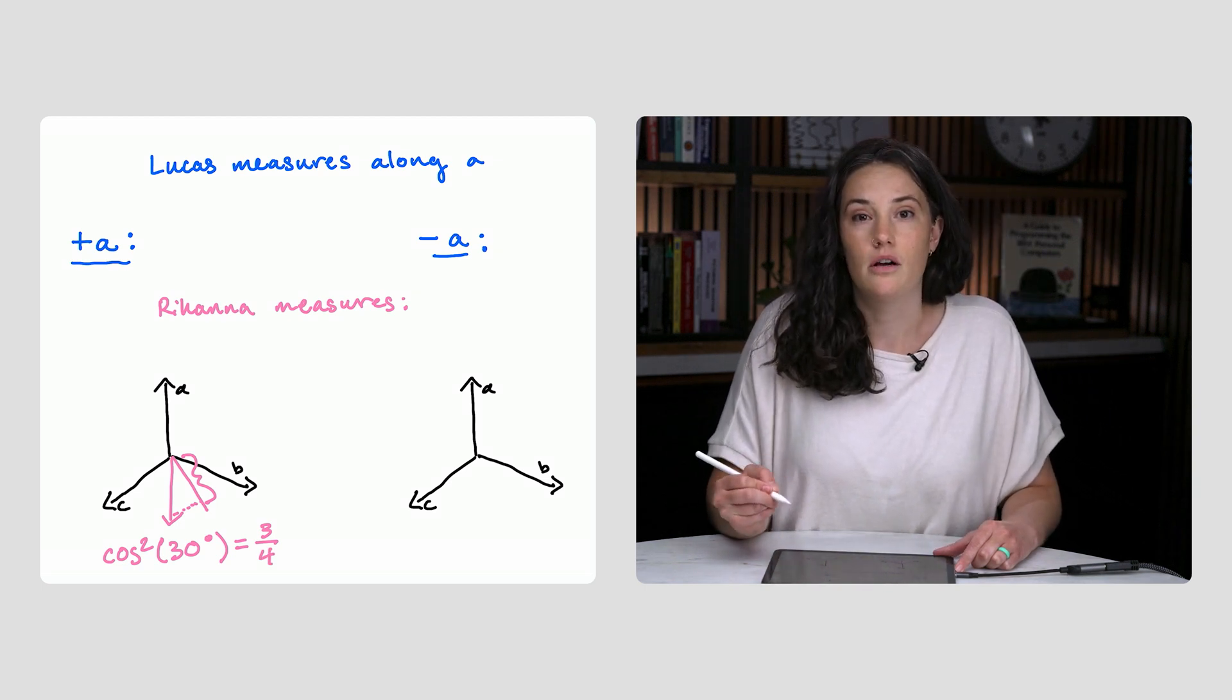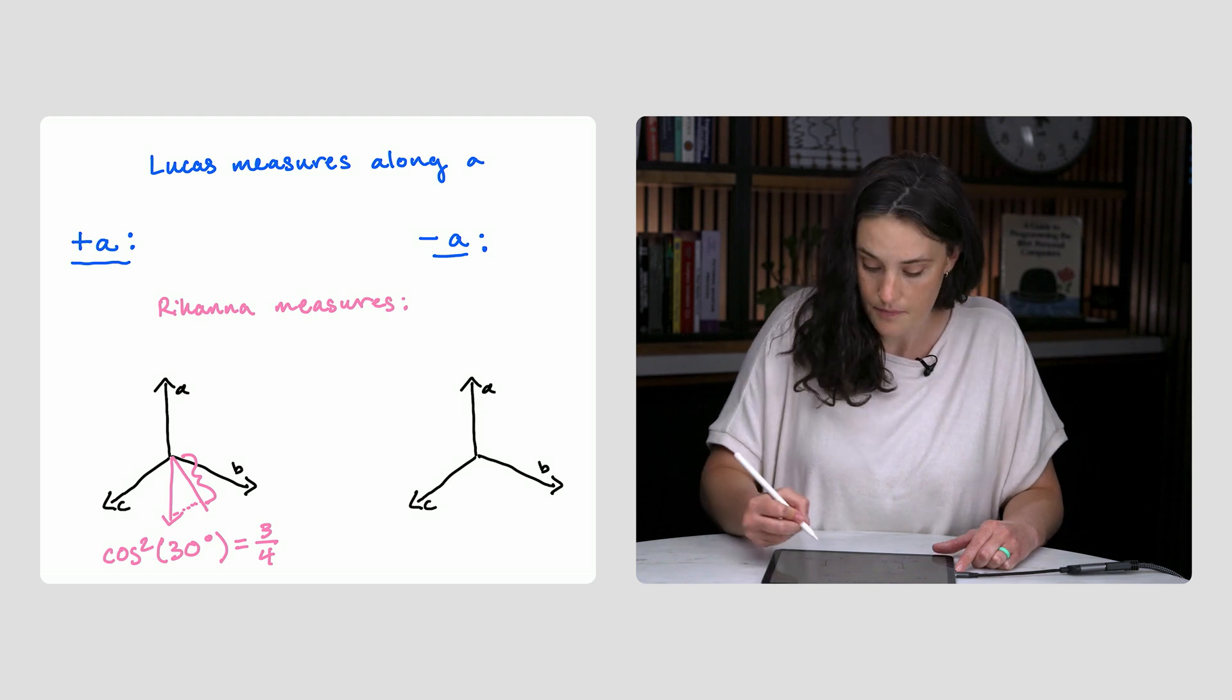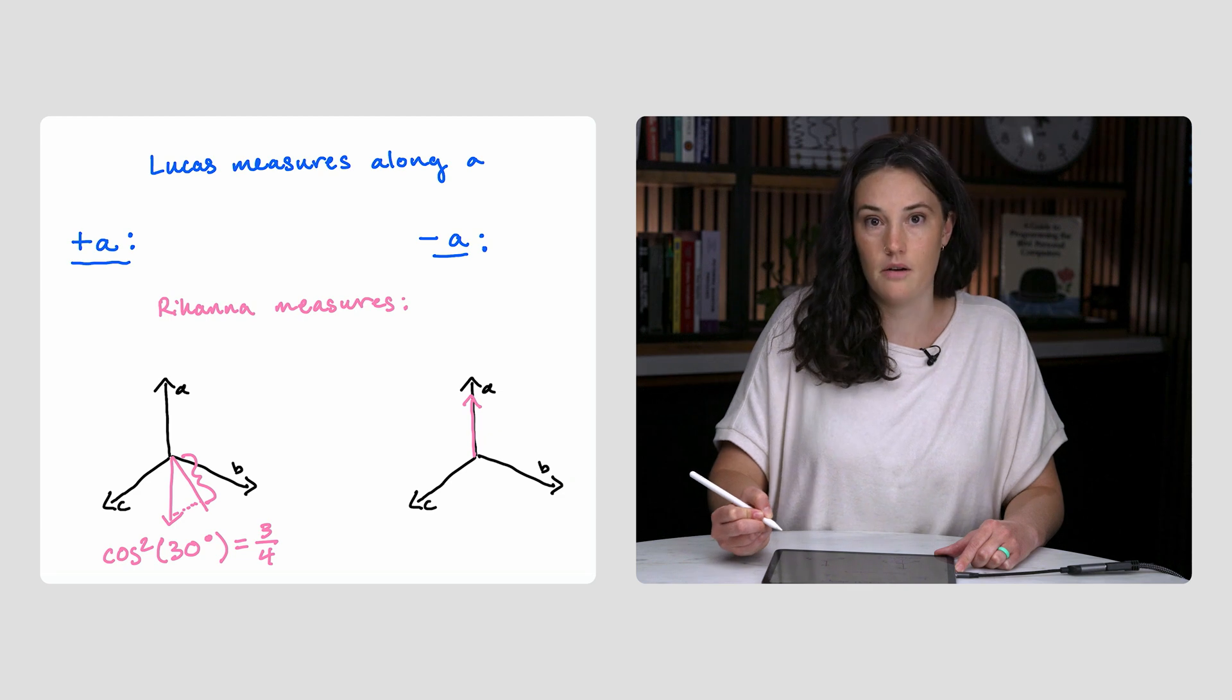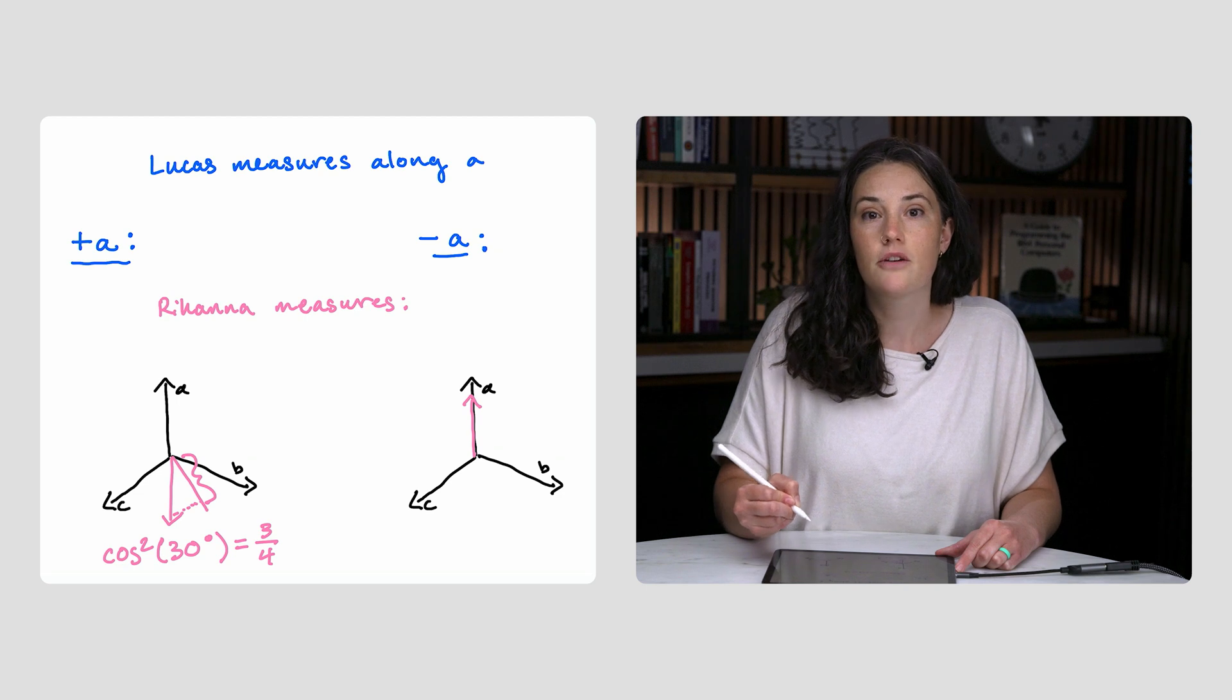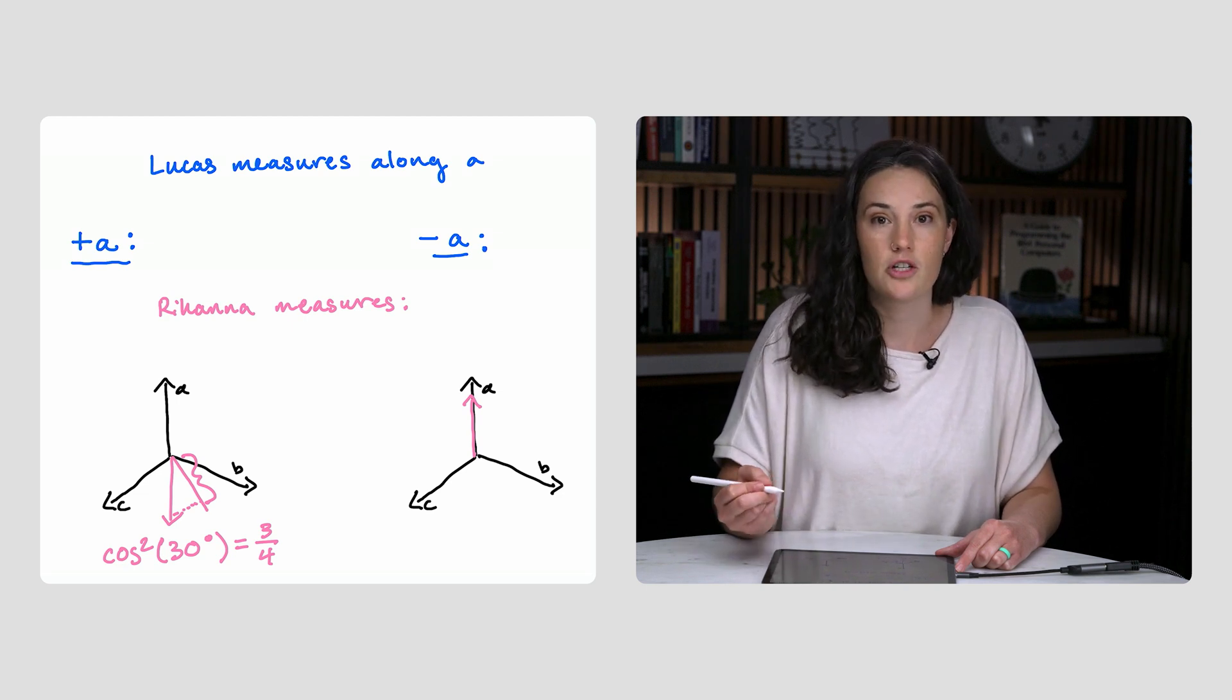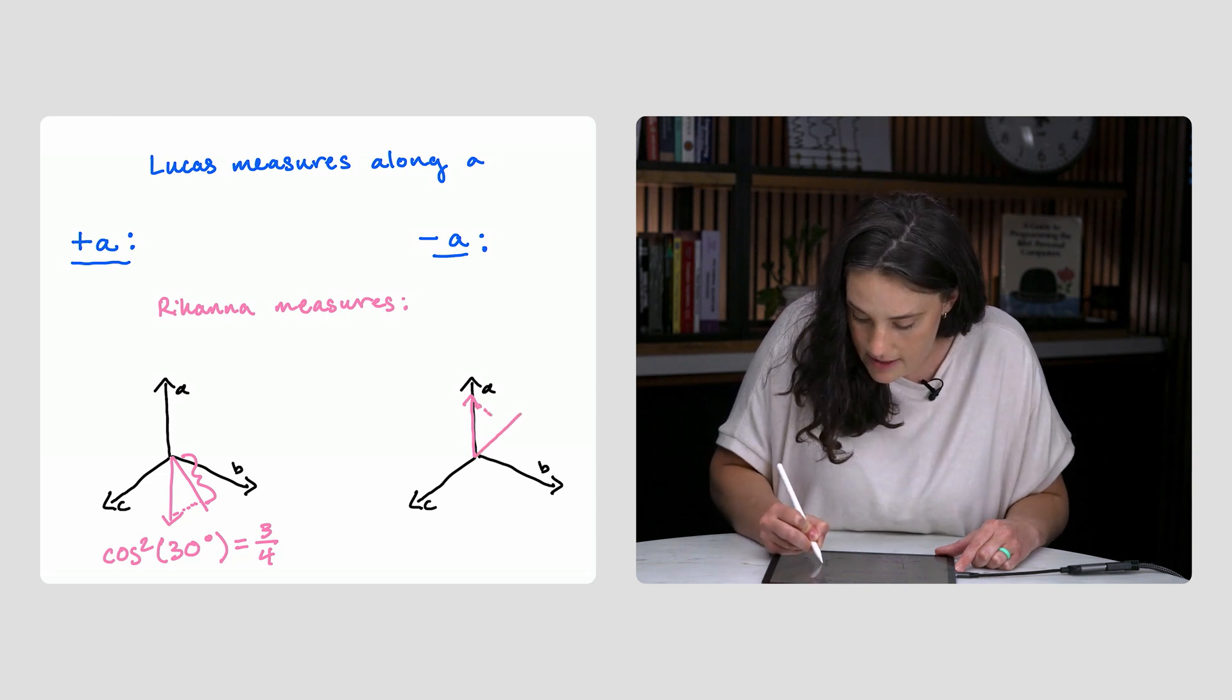what if Lucas measures spin down along A? We know Rihanna would measure spin up along A. So we can draw another vector here. Now this vector representing this knowledge is 120 degrees from each of the other two axes, B and C. So we can do the same geometry trick, but this time we'll get cosine of 60 degrees.